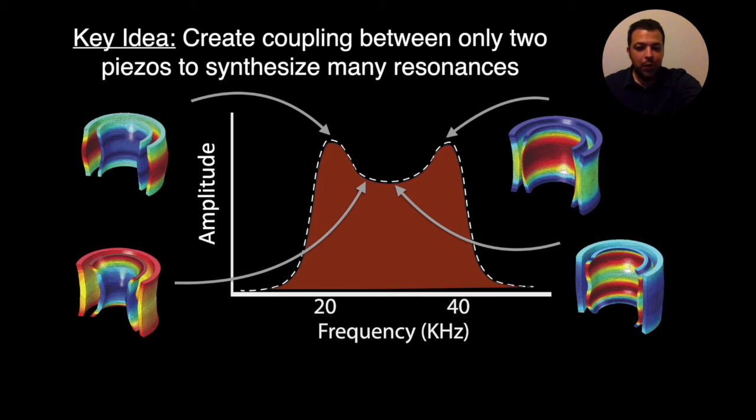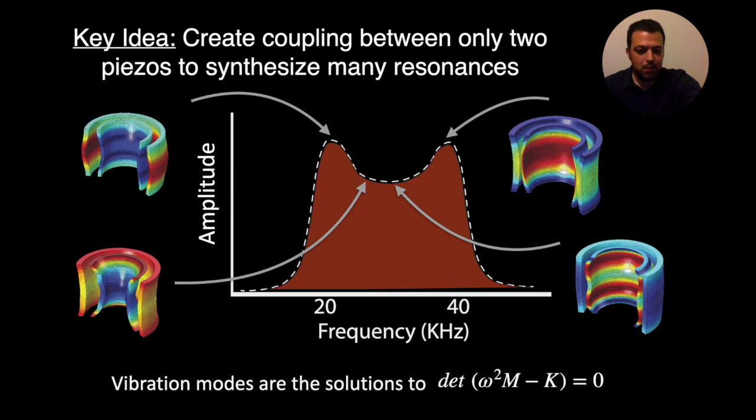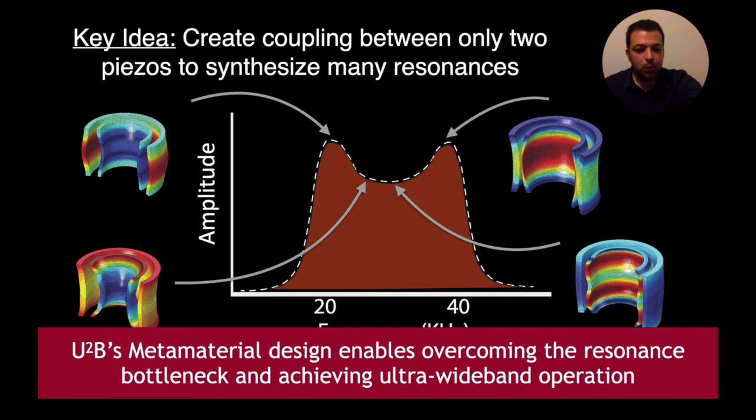Now I explained these modes at a very high level, but indeed these modes and these many resonances can be derived as a solution of the differential equation which is shown here in the form of the determinant equation. And in this determinant equation, omega represents frequency, m is a mass tensor and k is elasticity tensor. In the interest of time, I will not get into the details of this equation, but I would like to invite you to read the paper to know more details about this equation and why it leads to these many different modes of resonance. The conclusion here is with U2B metamaterial design, we were able to enable the resonance bottleneck and we were able to achieve ultra wideband backscatter.